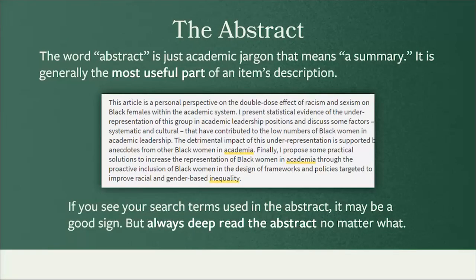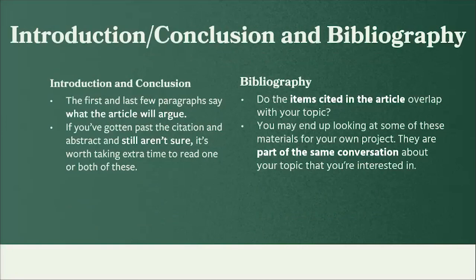The most important part of an article's detailed description is the abstract. It's a brief summary of an article's main argument or content. It's always good to see your search terms featured here, but also consider mining the abstract for new search terms. If you'd like to do a deeper dive to get more detailed information about an article's content, read its first and last few paragraphs. This is usually where authors lay out the big picture of their work. Also consider looking at the bibliography to see who else writes about the topic that might be worth reading.